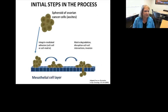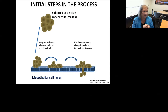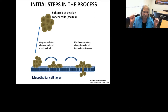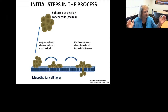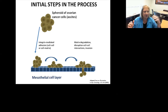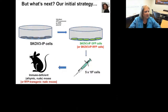The initial steps in this relapse process are that these left-behind cells form small spheroids, and then they adhere to the mesothelial layer that surrounds all of the organs. This is a very, very thin layer that covers all of the organs and the peritoneal surface. The ovarian cells then sit down on this layer, penetrate it, and begin their extravasation process.